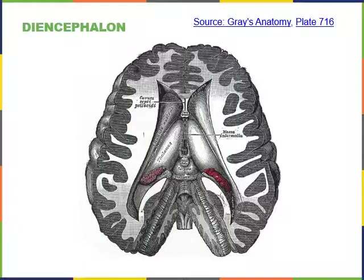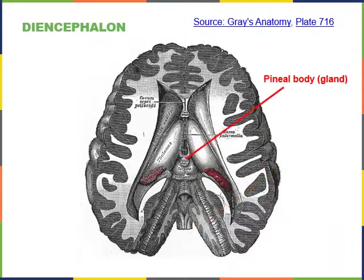In a transverse section of the brain we can see the thalamus as the large central region of the diencephalon. On the midline we can see the pineal body or pineal gland, which is the major structure of the epithalamus. The pineal body is responsible for producing the hormone melatonin, which is released at night and is important for regulating the 24-hour day-night rhythm, or circadian rhythm.